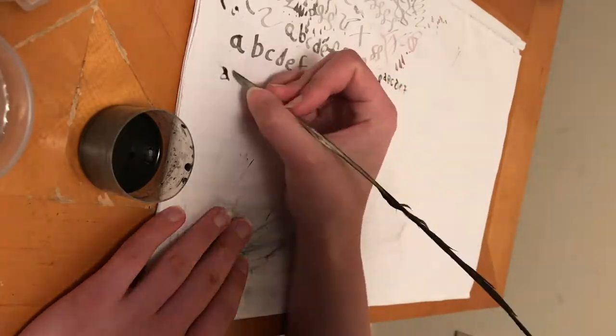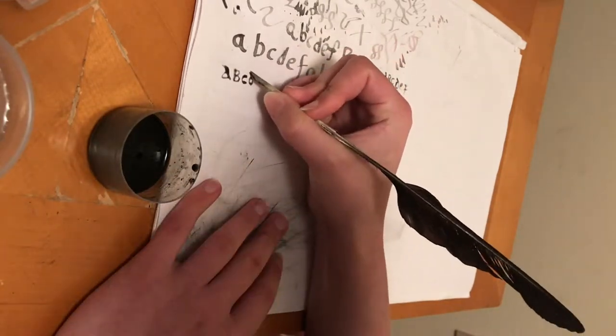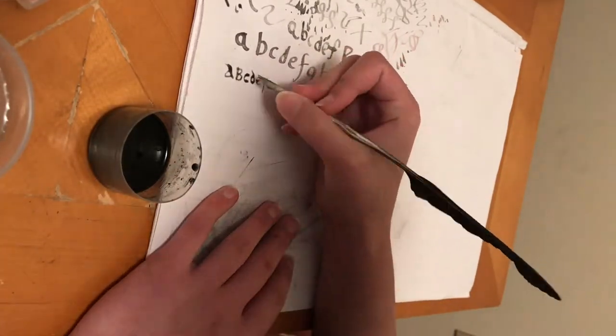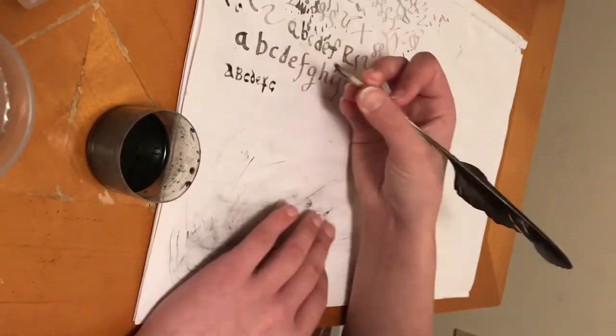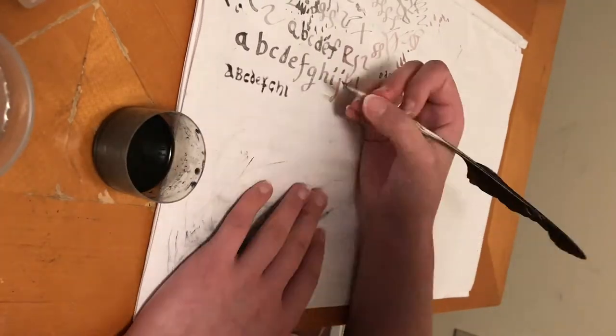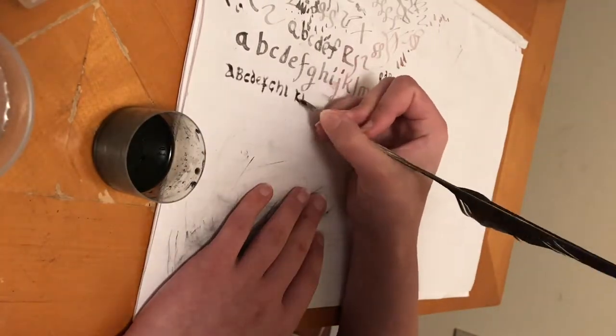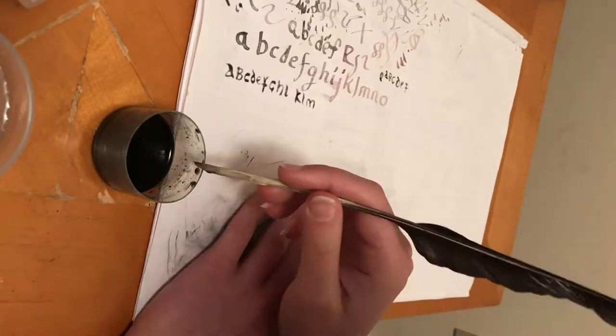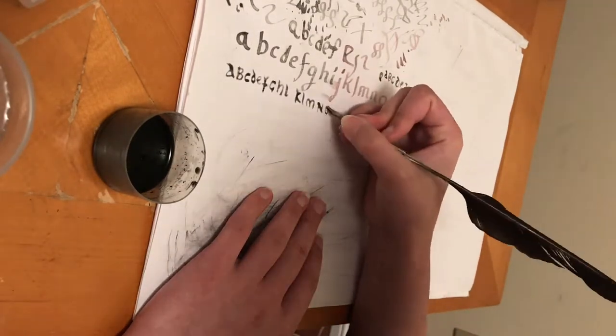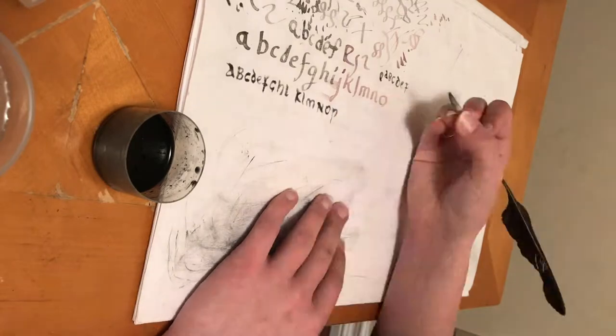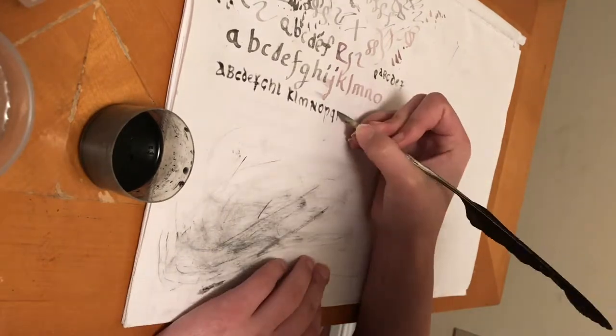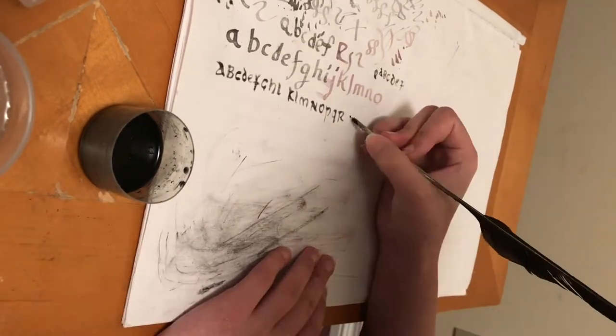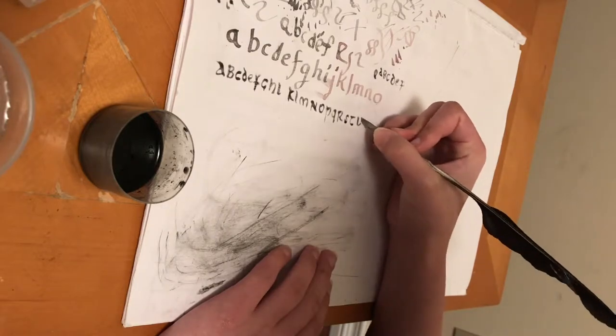The script I used is the Roman uncial script, which was used between the 4th and 8th centuries CE by Latin and Greek scribes, though the earliest examples date back to the late 1st and early 2nd centuries CE. The uncial script is a majuscule script, so all the letters are capitalized, and the letters are disconnected from one another, but it has no word separation and no punctuation.